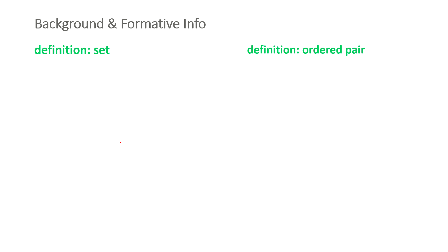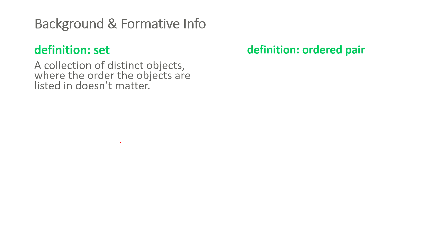A couple of background pieces of information before we get into the definition of a graph and some of its components. The first thing we need to talk about is what is a set. A set is simply a collection of distinct objects. One of the key things about a set is the order in which those objects are written doesn't matter, and you have distinct — all different — objects.